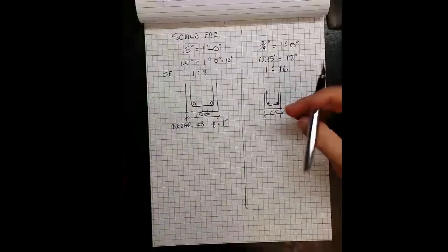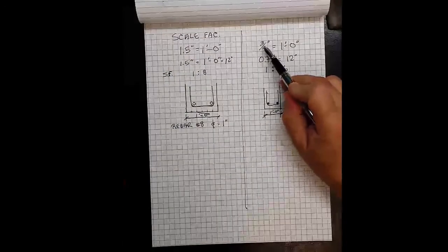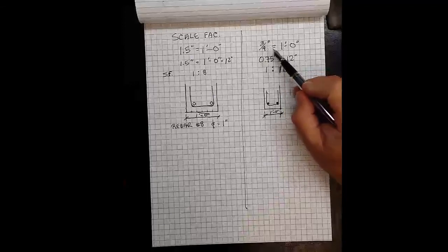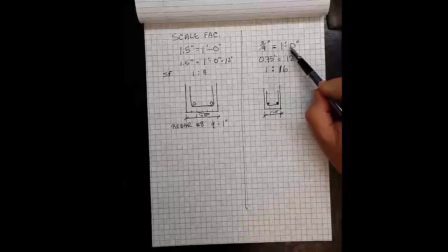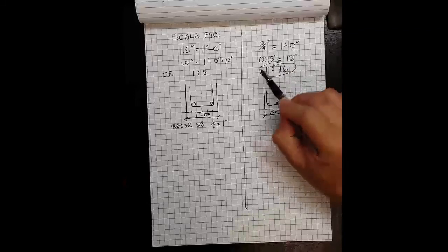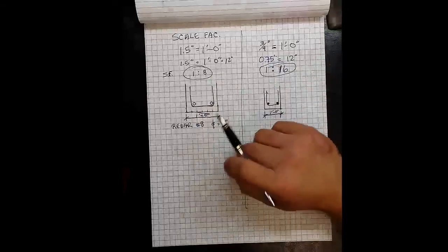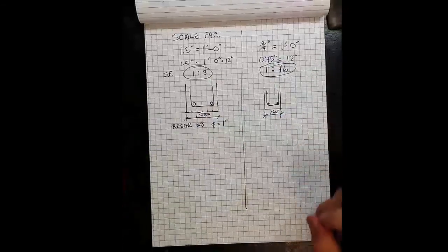If you're working in the metric system, it would be a very similar process. You would simply draw out your drawn scale and its equivalent physical scale and work out what your scale factor is, which is the ratio between the drawn and the physical objects. That concludes this video.